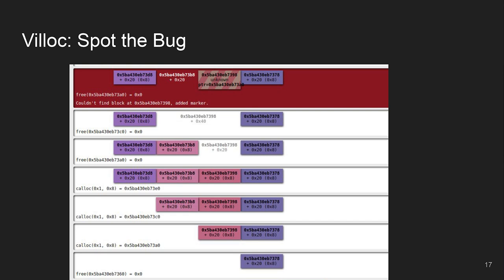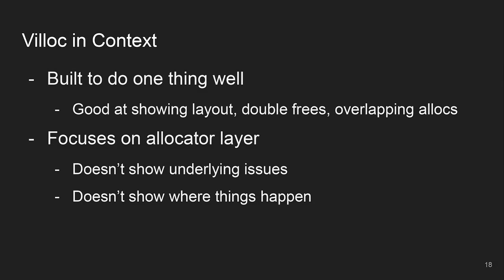To put it in context, Vilek is written to do one thing very well, and that's to show us what's going on with the layout. It makes it easy to see the layout - you can see a lot of things happening, it gets wider and taller, and you can scroll through and see the parts you're interested in. It's really good at showing allocator-level stuff - double frees, overlapping chunks. But it's also just focused on the allocator layer, so it doesn't show you why that overlapping chunk happened or where that free got called in the context of the main module - and that's important data.